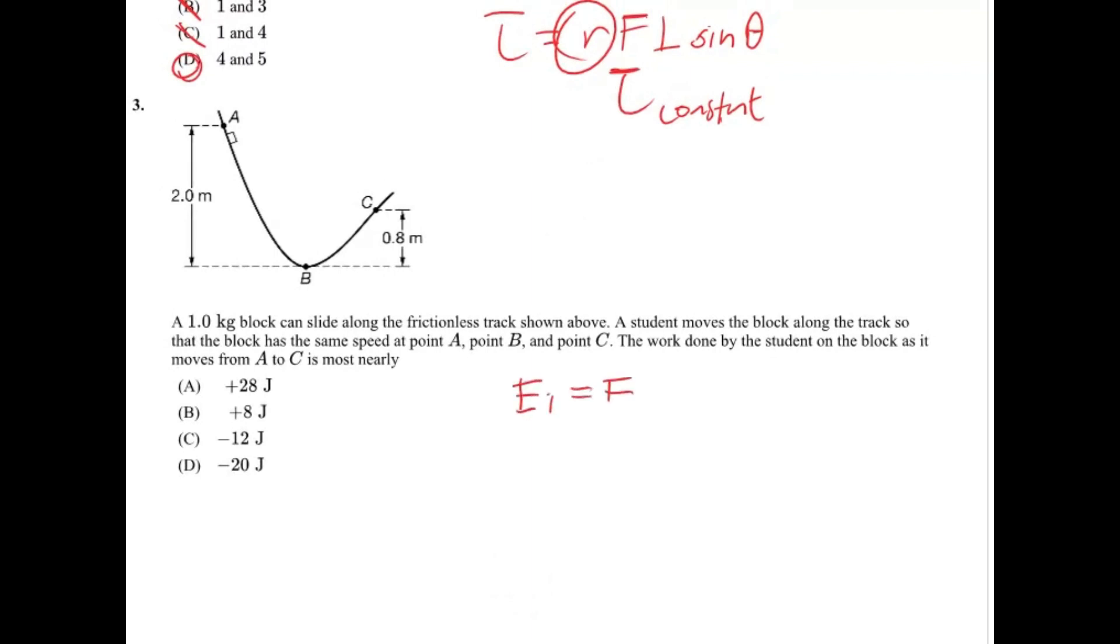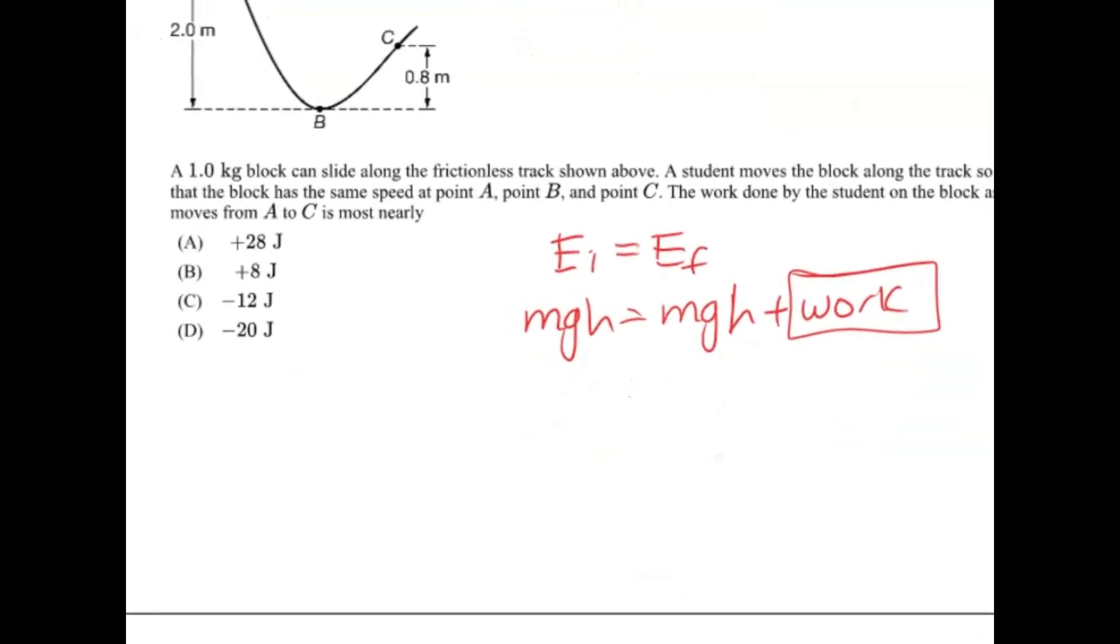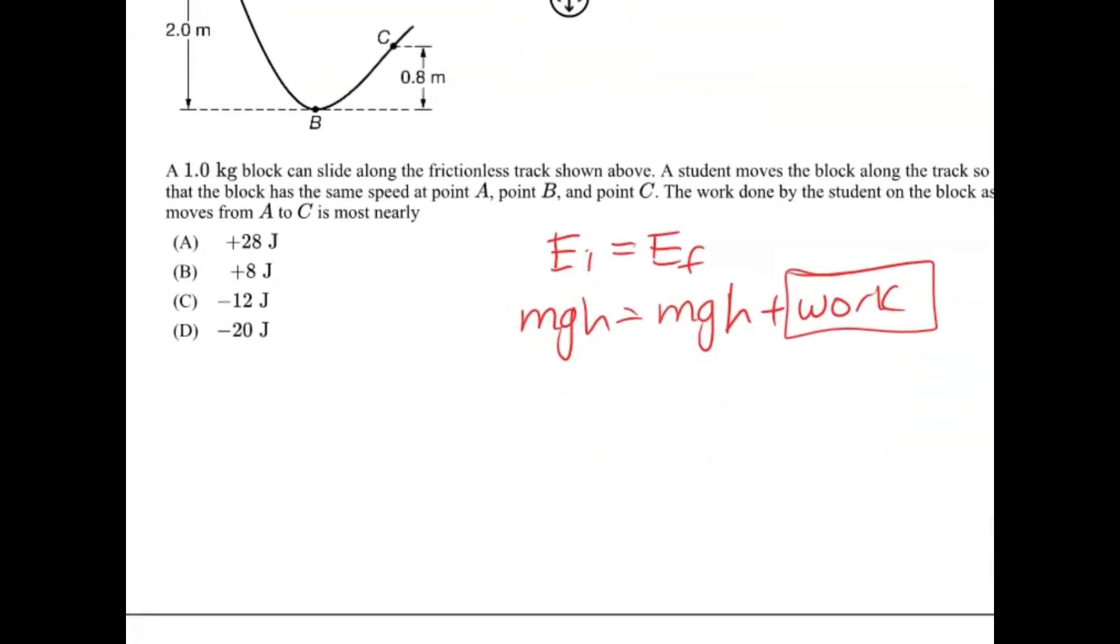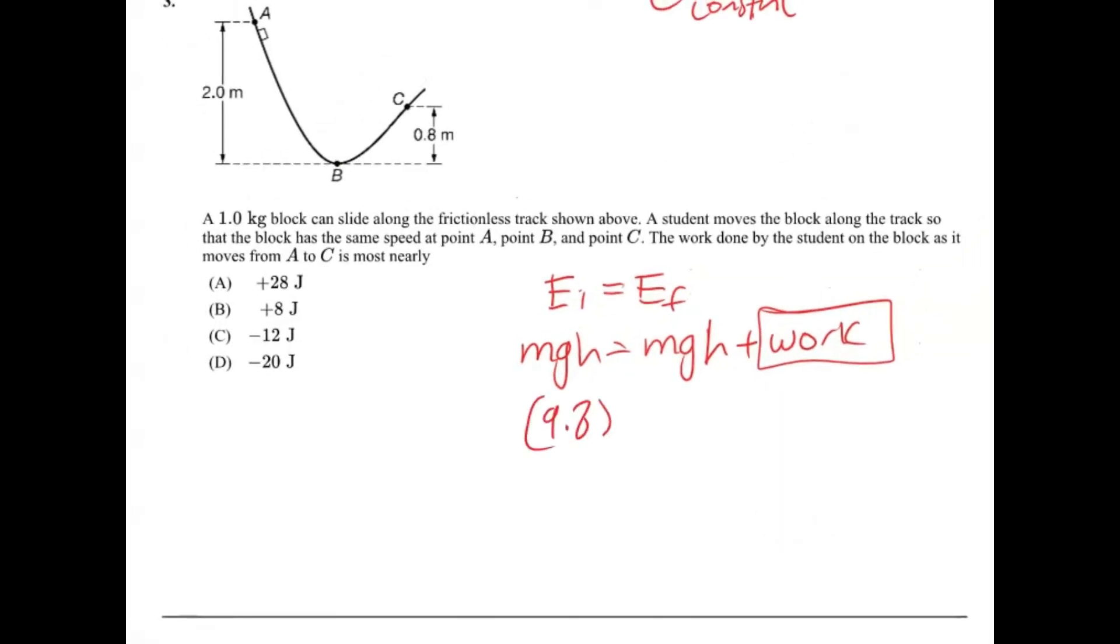So this is a conservation of energy, and I'm pretty sure we can observe it from the gravitational potential energy standpoint. So energy initial equals energy final, right? And then let's just say mgh equals mgh. However, the final energy is also going to have work, and this work is going to be basically energy loss to say friction, air resistance, or just in general.